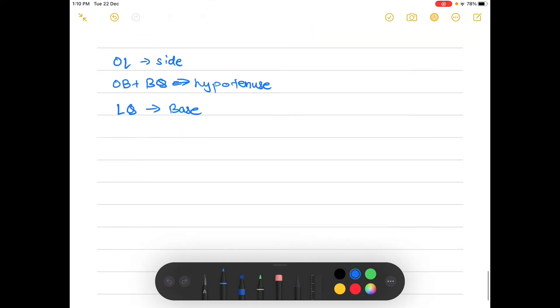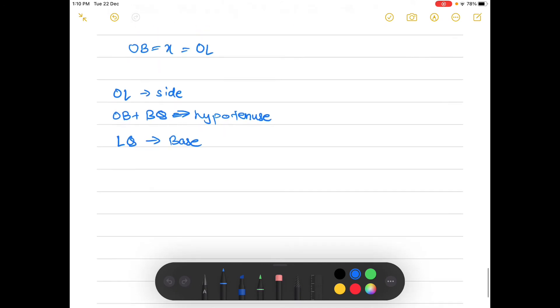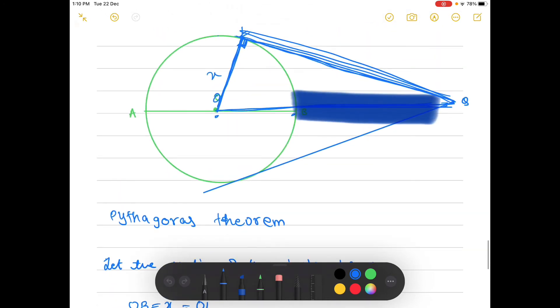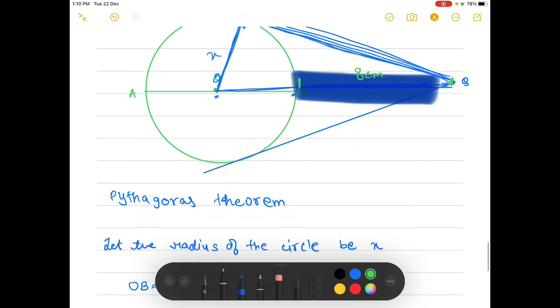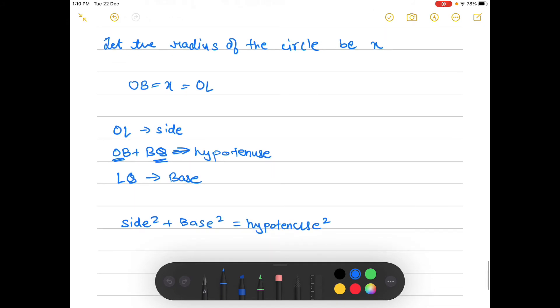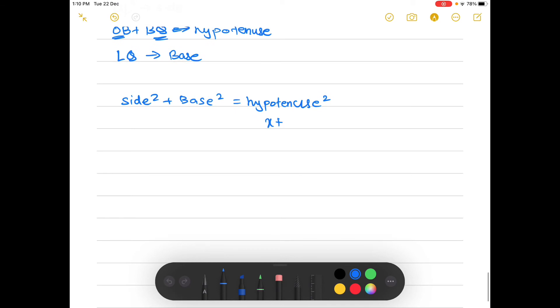Now we can use our Pythagoras theorem. It says side squared plus base squared is equal to hypotenuse squared. We know hypotenuse is equal to OB plus BQ. They have given us the length of BQ which is 8 centimeters, so we can directly put it here which is OB, and OB is x. So hypotenuse is equal to x plus 8.